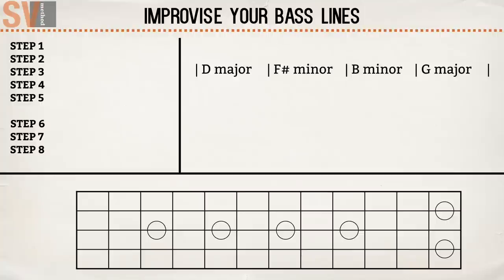The first and most important step of this action plan is rhythm. This is the basis for your bass line. You can already improvise a lot with only rhythm.